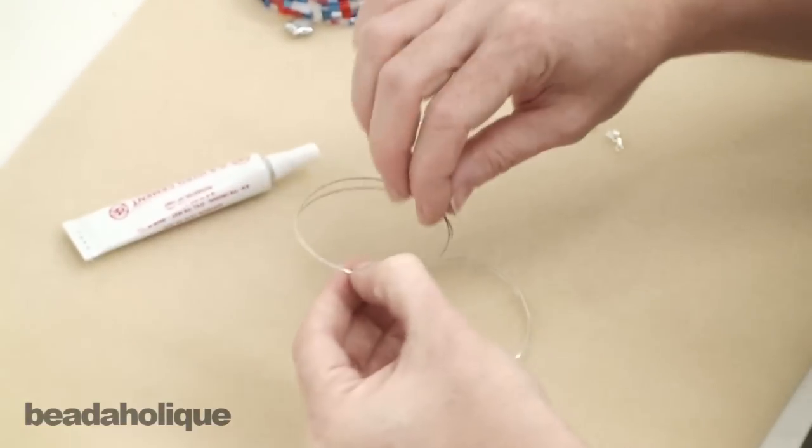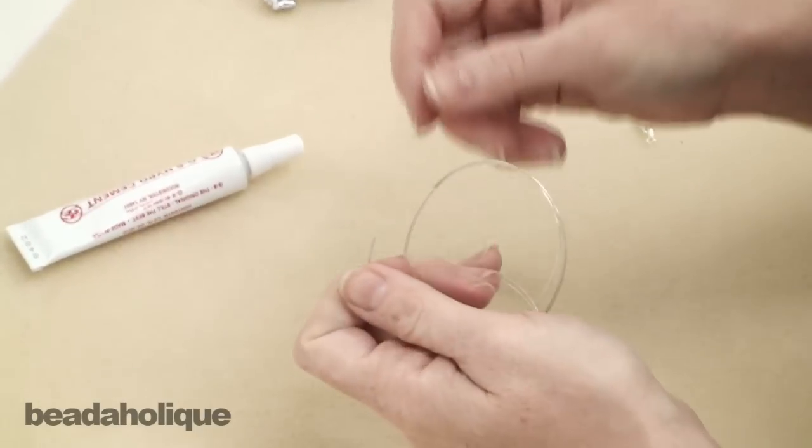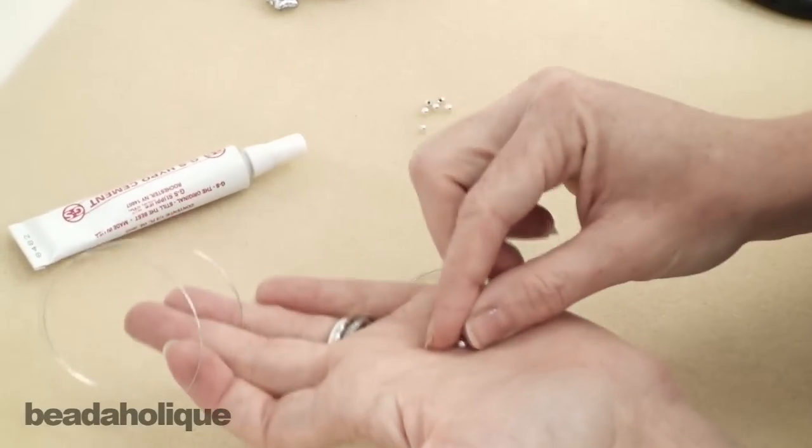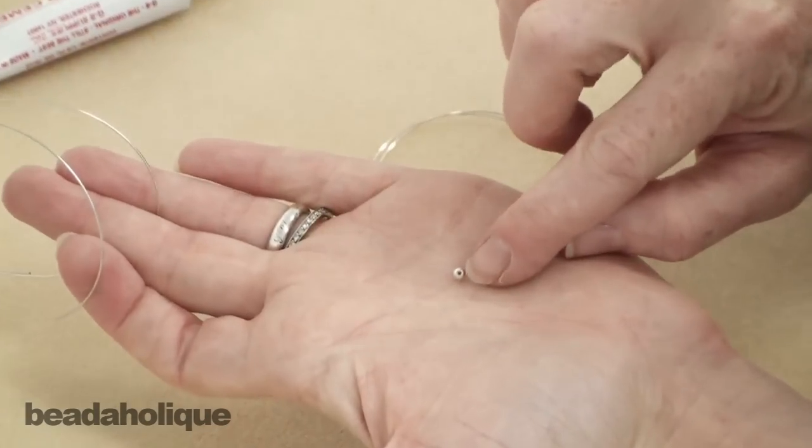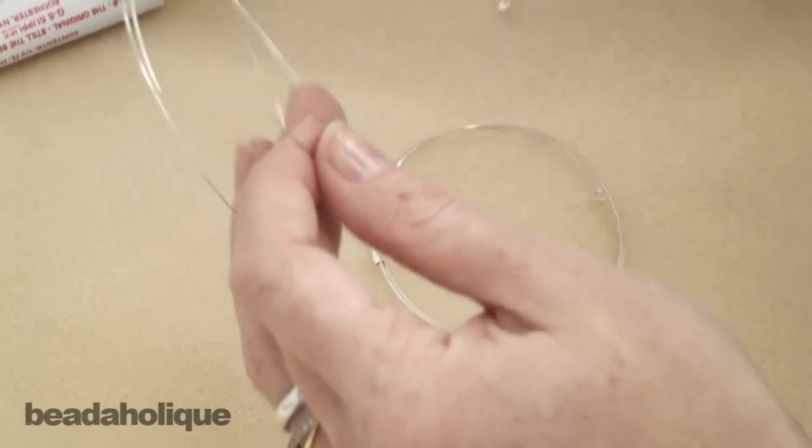So the third and final way I want to show you, and this way looks very clean, is using one of these little end caps. It's got a little hole in it on one side and it's a nice round ball.